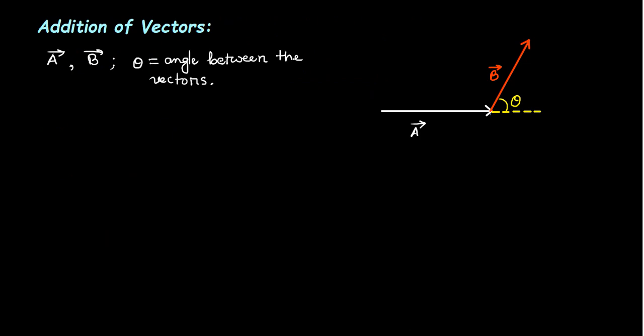Now let's go to the addition of vectors. Suppose I have two vectors A and B and I want to add A with B. I will draw A and B such that the initial point of B falls on the final point of A, and I can identify the angle between the vectors. The angle between vectors plays a very important role in vector addition, subtraction, and multiplication. When I add A with B, A plus B gives a new vector. That resultant vector R is identified by joining the initial point of A to the final point of B.